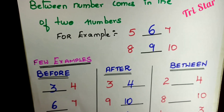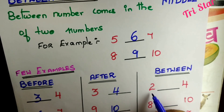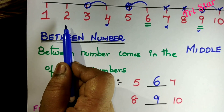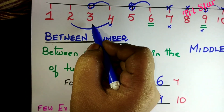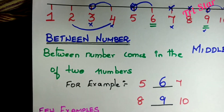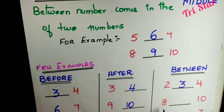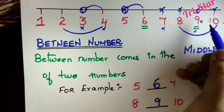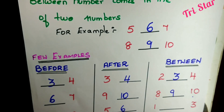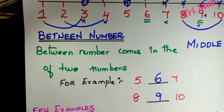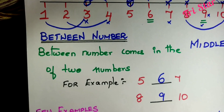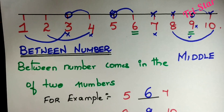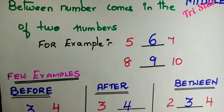Now the last one is the between number. Between numbers are the middle numbers of 2 numbers. 2 and 4 is given — what is the middle number of 2 and 4? It is 3. Middle number of 8 and 10 is 9. Middle number of 1 and 3 is 2. Hope all of you have understood the before, after, and between numbers. Thank you.